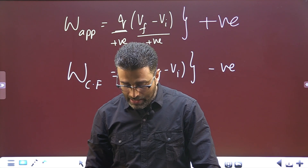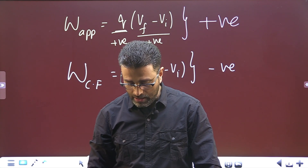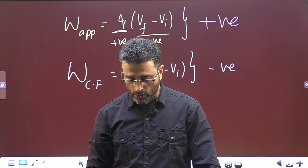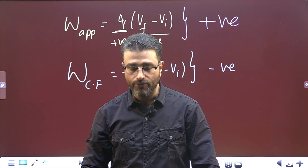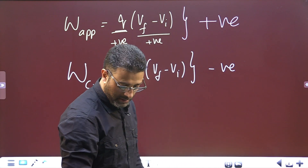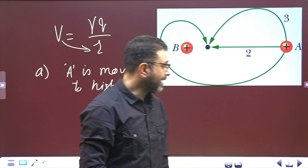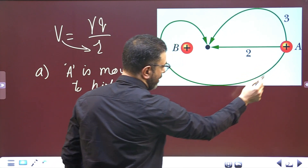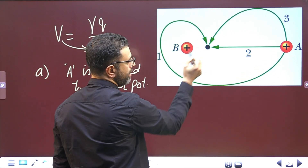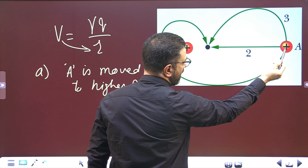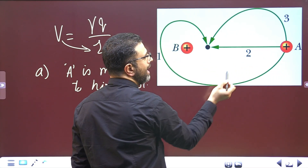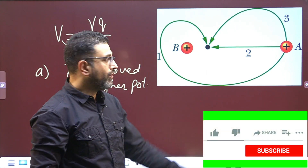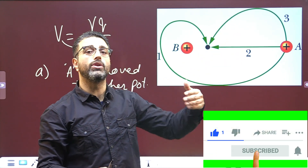For part D: rank the paths according to the work our force does, greatest first. The three paths are: path one, bringing A along a curved path; path two, bringing A straight to the point; and path three, bringing A along another route. We have to rank these three paths according to the work being done.